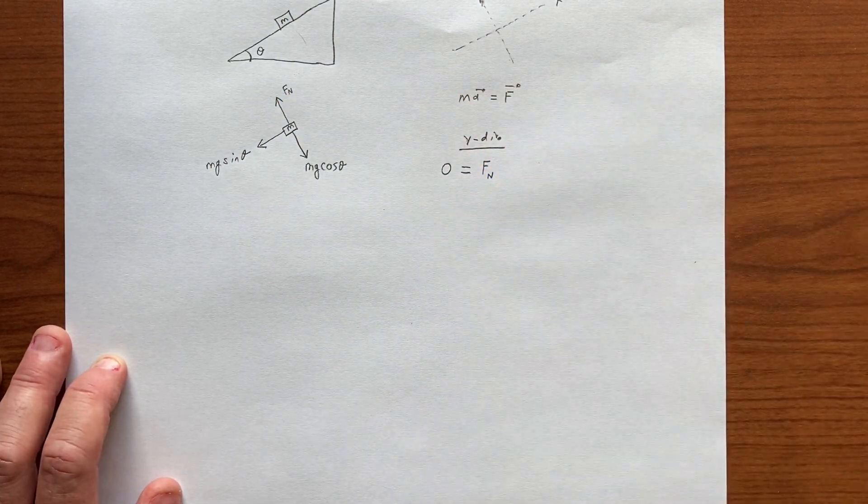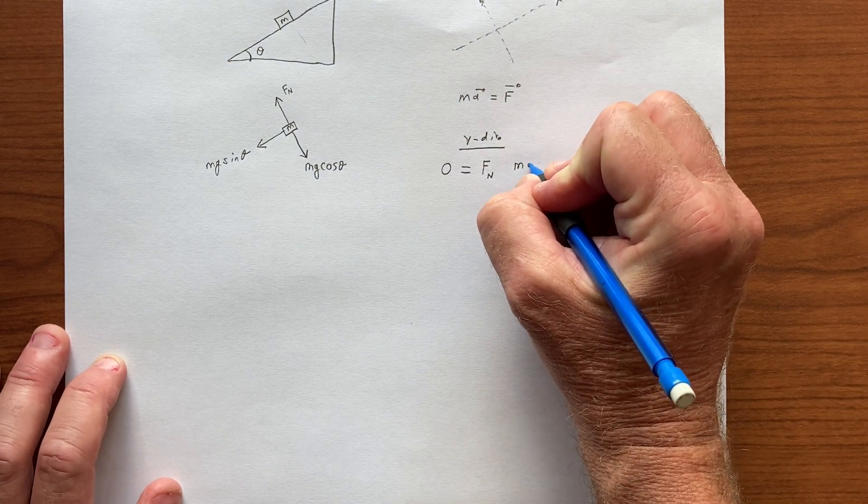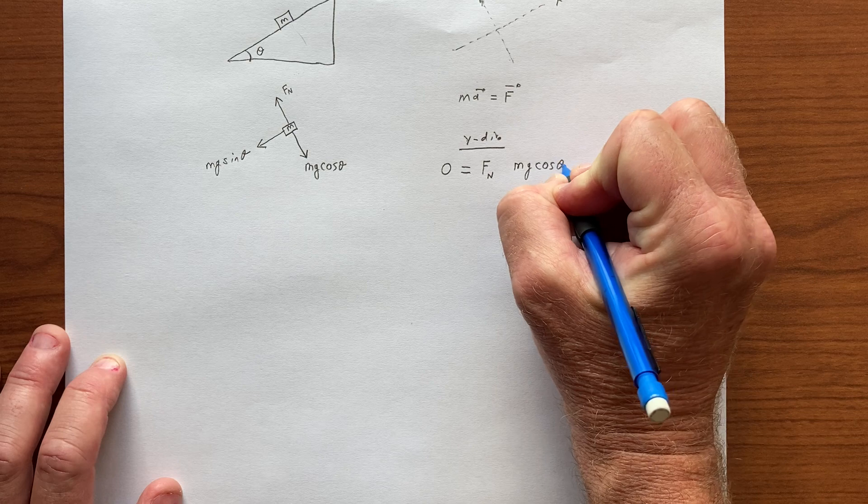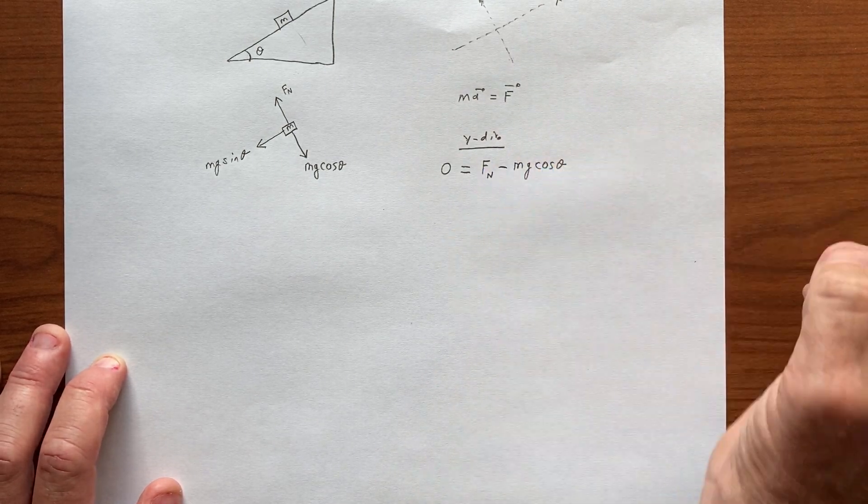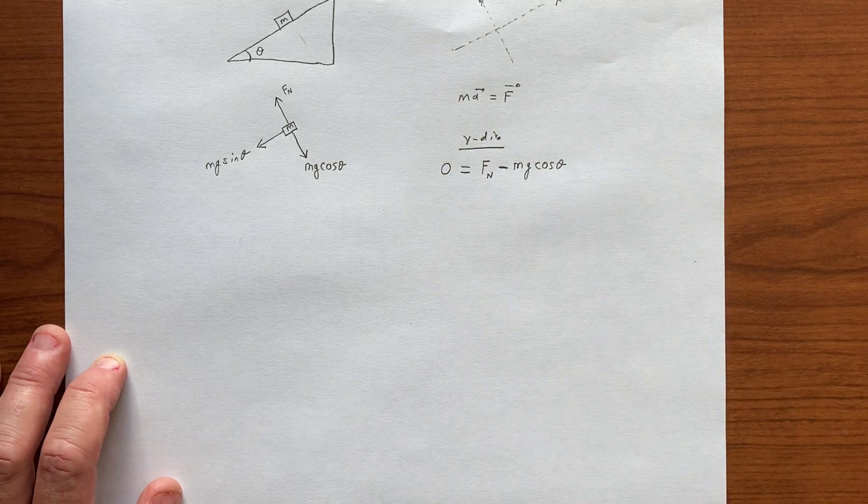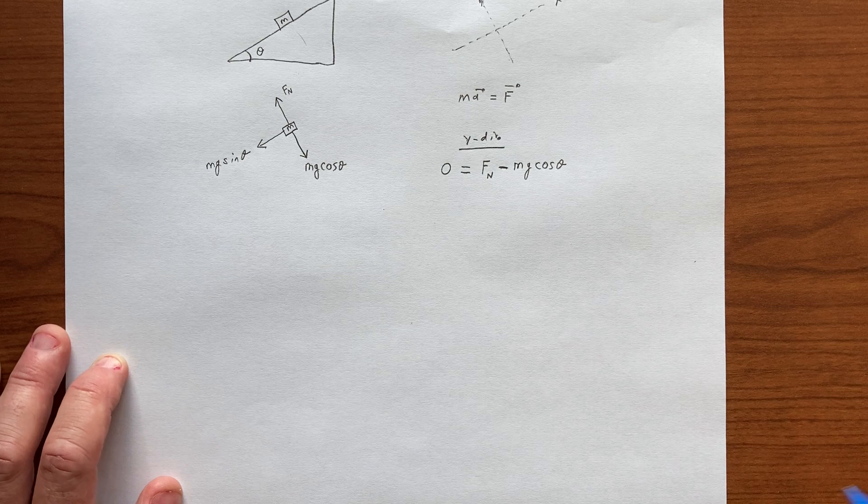If one's positive, let's bring fn in with a positive sign, and let's bring mg, or rather mg cosine theta, with a minus sign, so that all these quantities are positive, but one comes in with a minus sign there, and that's the y direction component of ma equals f.